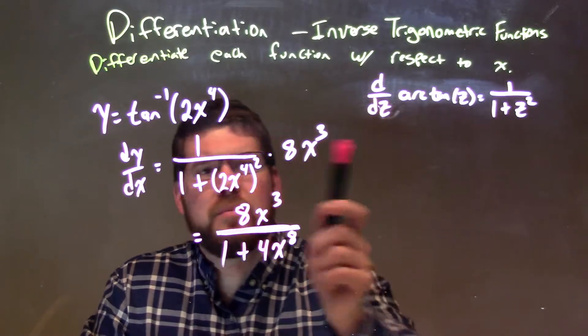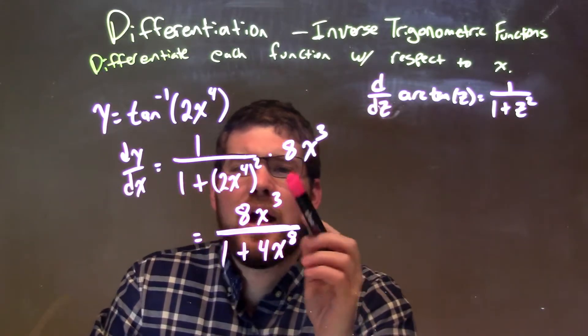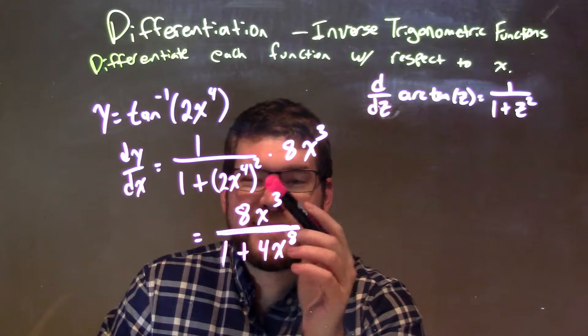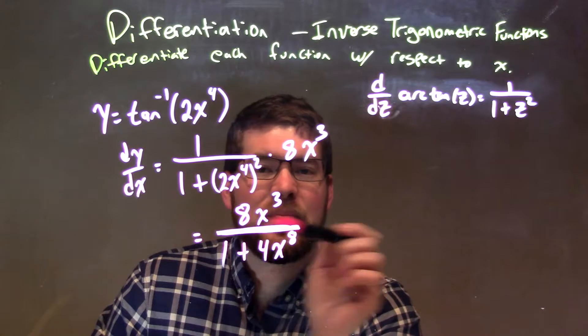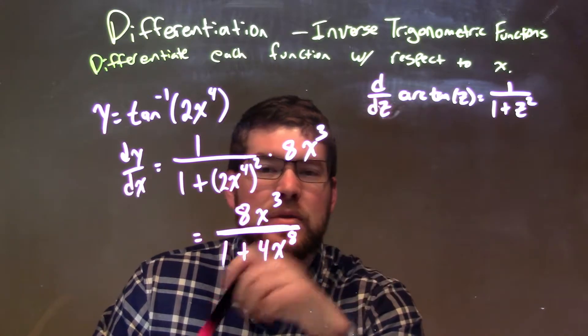Now let's simplify this. Draw the 8x to the third power at the top, and we multiply 2x to the fourth by itself by squaring. So we have a final answer here of 8x to the third over 1 plus 4x to the eighth power.